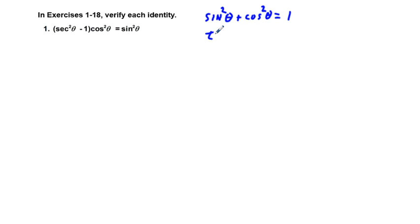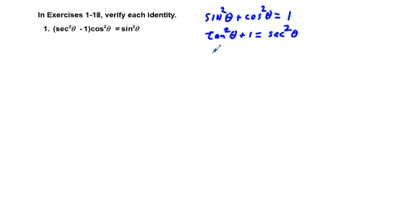Our tangent squared theta plus 1 is equal to secant squared theta. And finally, we have cotangent squared theta plus 1 is equal to cosecant squared theta.